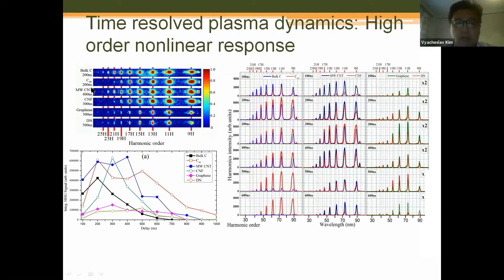According to traditional high harmonic generation theory, the ionization potential plays an important role in the cutoff position. For samples used in this experiment, C60 has a smaller ionization potential of around 7.6 eV compared with bulk carbon or a single carbon atom, which has an ionization potential around 11 eV. This explains why we see different cutoff positions: from smaller nanoparticles we expect more enhanced harmonic emission but in the range of shorter harmonic orders.